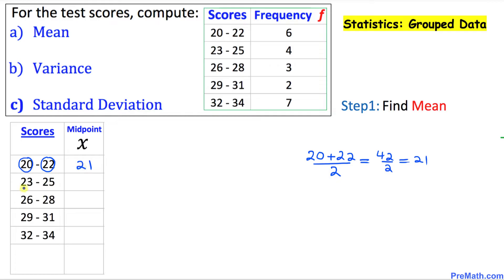Likewise, if you add each pair of numbers and divide by 2, we get 24 for the second group, then 27, 30, and 33 for the remaining groups.